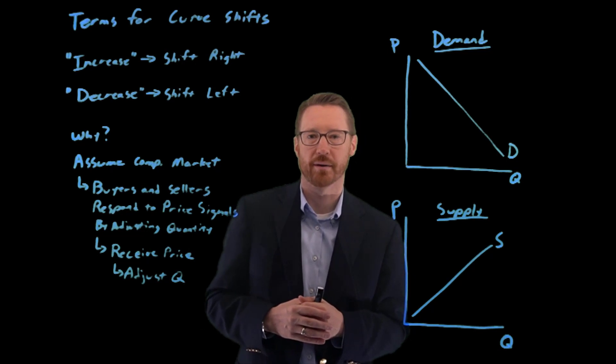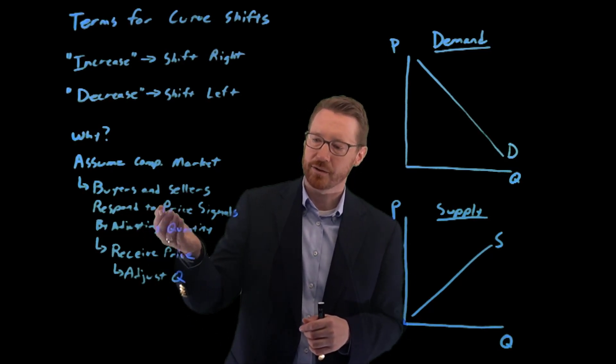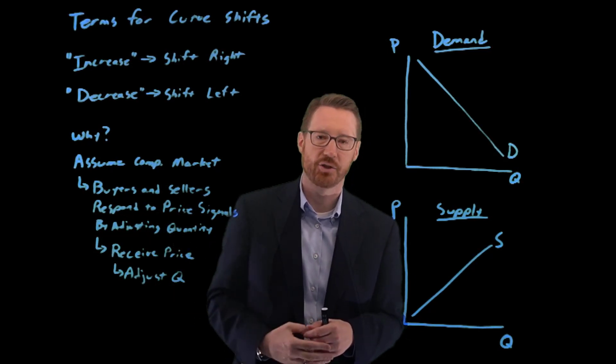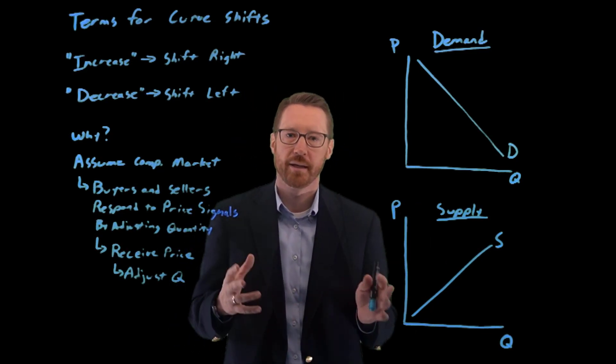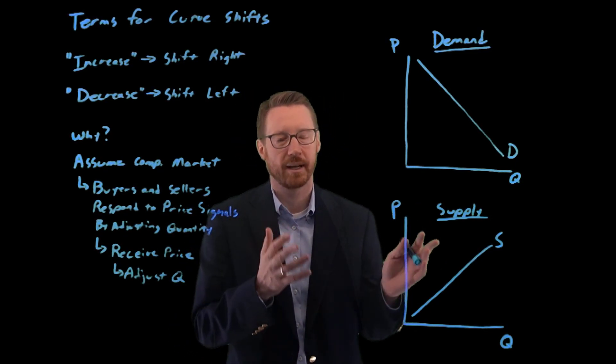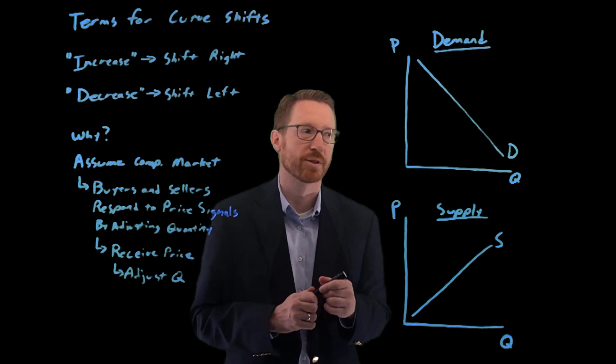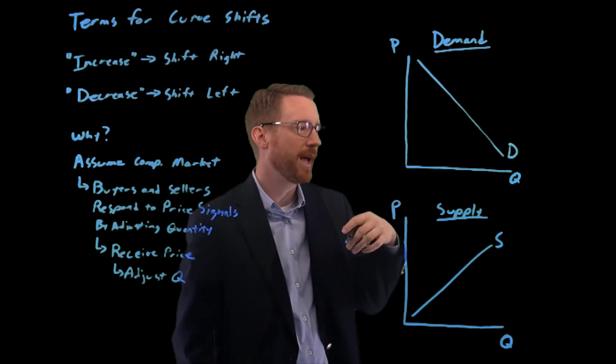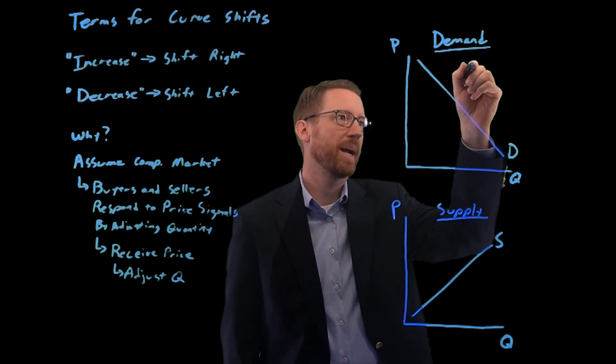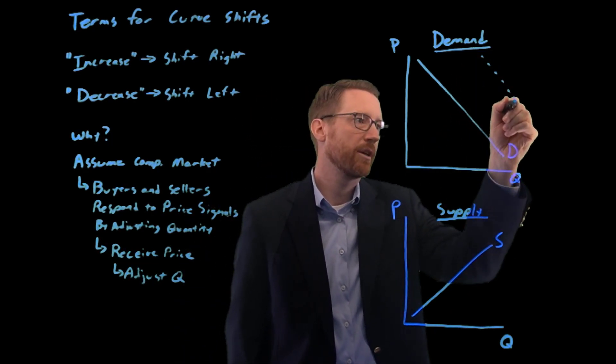That's our story here. Buyers and sellers get price signals and then they adjust their quantity. So what does that look like in our supply and demand diagrams and curves? If we think about a demand curve, if we have an increase in demand, then it's going to shift to the right.